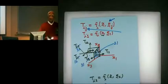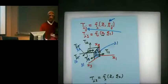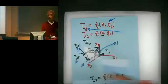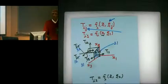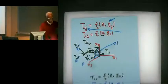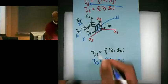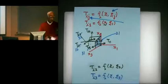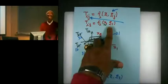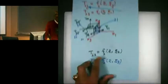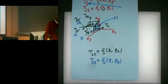The second index on Cauchy's stress tensor T gives the direction of the normal to the plane, and the first index gives the direction of the force on that plane. Each plane has three forces: one in the X1 direction, one in X2, and one in X3. If the force is in the direction of the outward normal, that is normal stress; if perpendicular to the outward normal, that is tangential or shear stress.